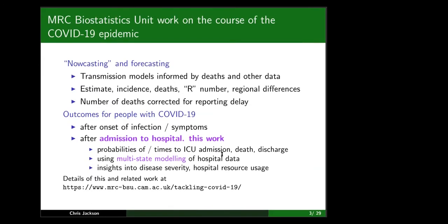This is part of an entire program about modelling the epidemic. There's a big jigsaw puzzle of different modelling pieces: transmission modelling, which gets in the news, is informed by observed deaths and many other data sources, and estimates COVID incidence and deaths with comparisons between regions. This particular work is about outcomes — the severity of the disease and resource usage — as outcomes for people who have contracted the disease, specifically after admission to hospital.